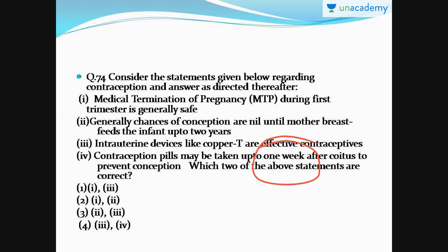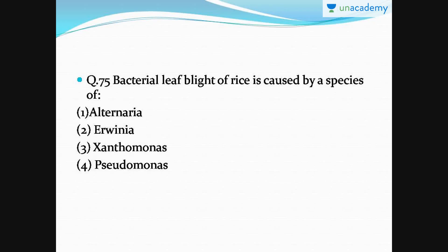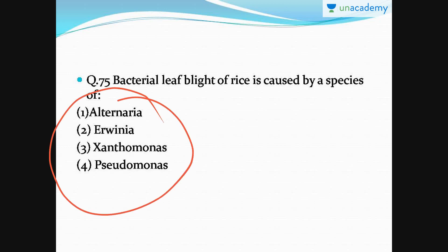Question number 75: bacterial leaf blight of rice is caused by a species of which organism? The right answer is option number three — Xanthomonas. The Xanthomonas oryzae species of Xanthomonas causes bacterial leaf blight of rice. In this disease, the color of leaves turns brown from green.